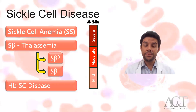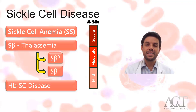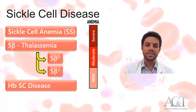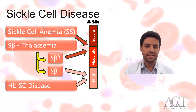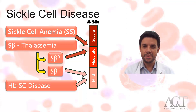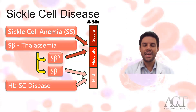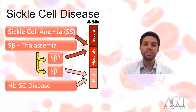The first difference I'd like to point out concerns the degree of anemia, with patients with sickle cell anemia and S-beta zero thalassemia presenting more severe anemia as compared to patients with S-beta plus thalassemia and hemoglobin SC disease.